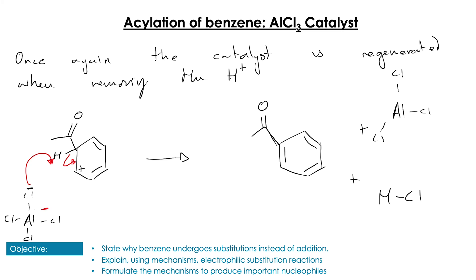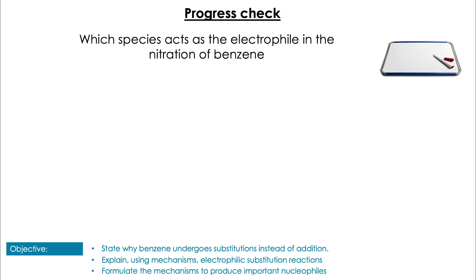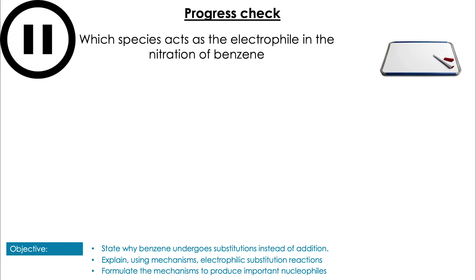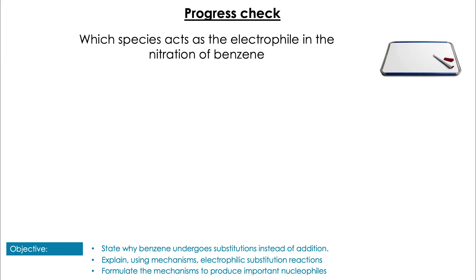Time for a couple of questions, whiteboards at the ready. First one: which species acts as an electrophile in the nitration of benzene? It is, of course, NO2+.